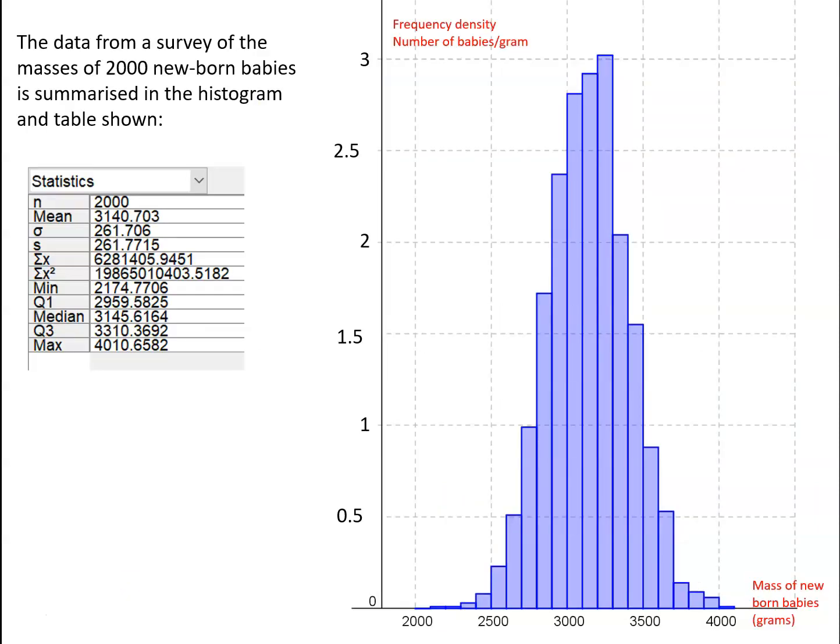Here we've got the data from a survey of the masses of 2,000 newborn babies, and it's summarized both in the histogram and in the table of summary statistics. And what I'd like you to do before you go any further is pause the video and write a brief paragraph describing the major features of this distribution.